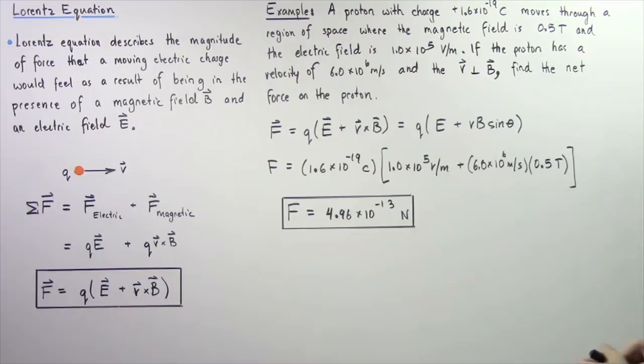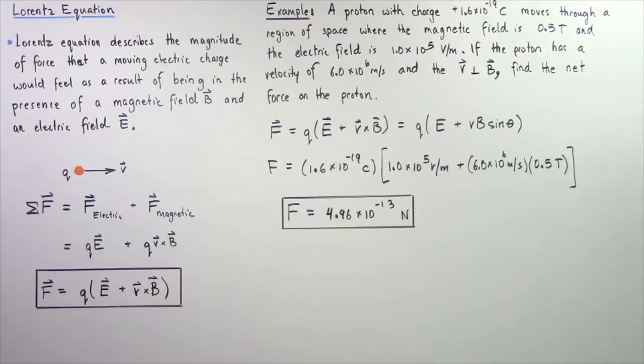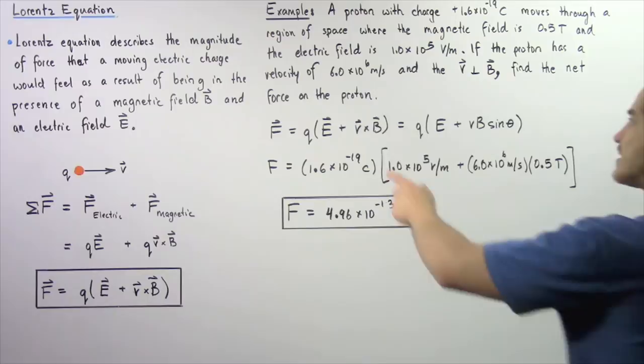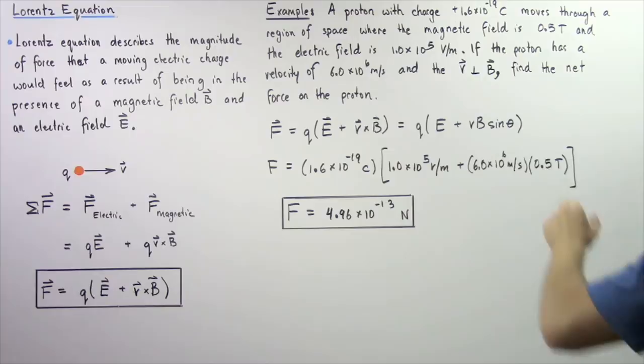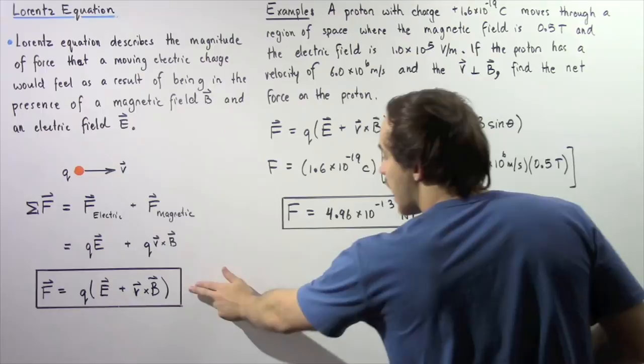Now let's look at the following example in which we're going to apply the Lorentz equation. Suppose a proton with the charge of 1.6 times 10 to the negative 19 coulombs moves through a region of space where the magnetic field is 0.5 teslas and the electric field is 1.0 times 10 to the 5 volts per meter. The proton has a velocity of 6 times 10 to the 6 meters per second, and the velocity vector is perpendicular to our magnetic field vector B — in other words, the angle is 90 degrees. Find the net force acting on the proton.